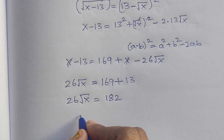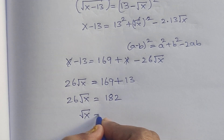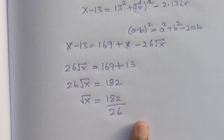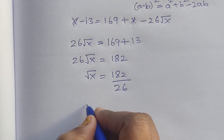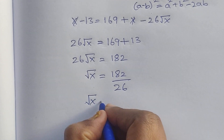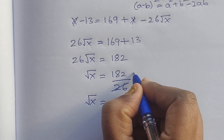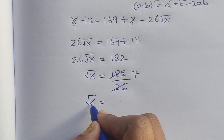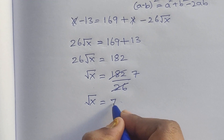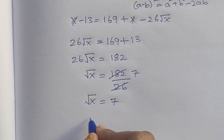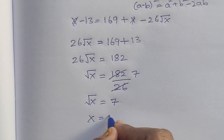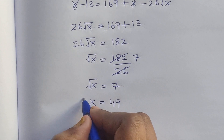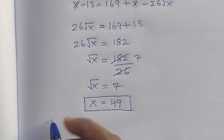So √x = 182 ÷ 26 = 7, therefore x = 7² = 49. Let's verify.